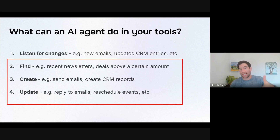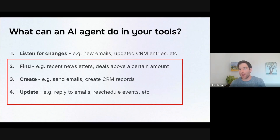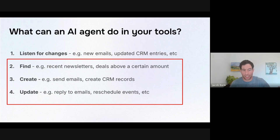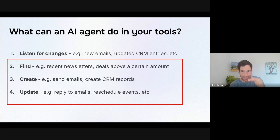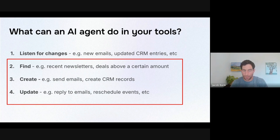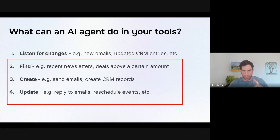The first is we're going to enable our AI agents to find things — look at all the email newsletters that came in the last week, look at all the customers in our CRM that are above a certain deal size, look at all the rows in a spreadsheet that correspond to a certain customer or tag or filter. Once you look up that information, you could use it to analyze it, summarize it, synthesize it, or use it to take action on the thing you've looked up. That's the finding capability.